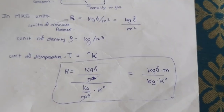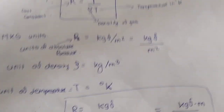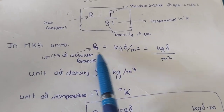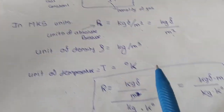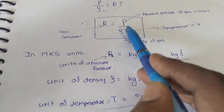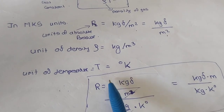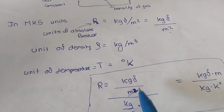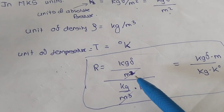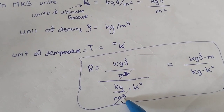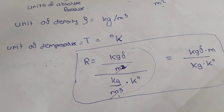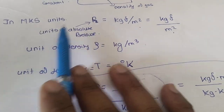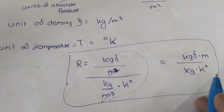In MKS units, P is in units of kgf per meter square, density is in kg per meter cube, and temperature is in degree Kelvin. The meter square and meter cube cancel, and one meter shifts to the numerator. So in MKS units, R is given by kgf·meter per kg·degree Kelvin.